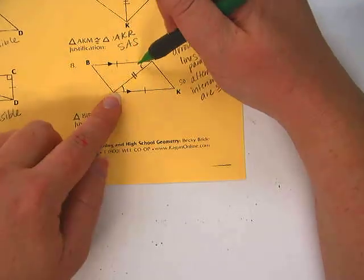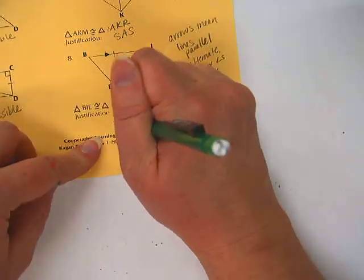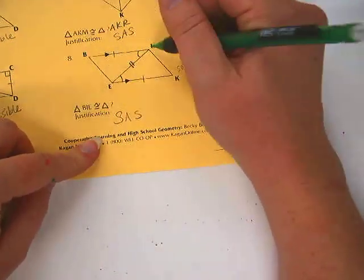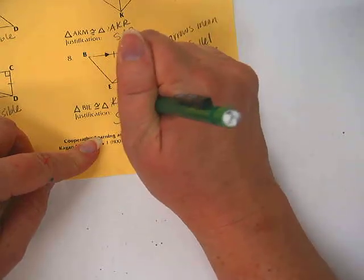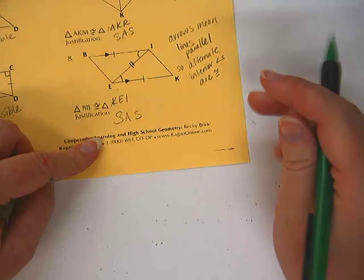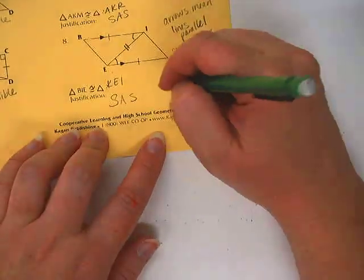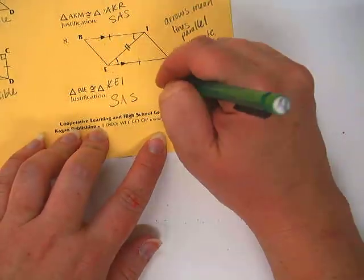Then we also have the reflexive property that tells us those are congruent. So because of those two things, we know side, angle, side. So that one can be done. BIE is going to be congruent to KEI because of side, angle, side.